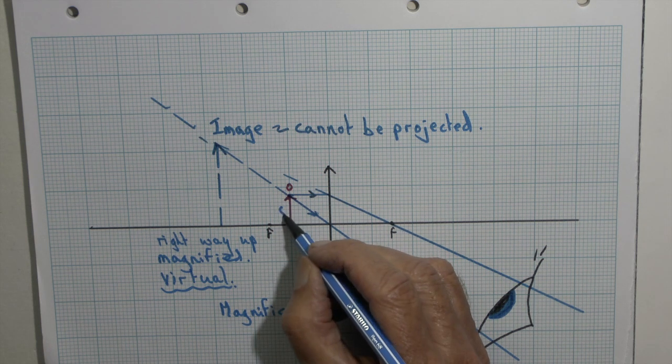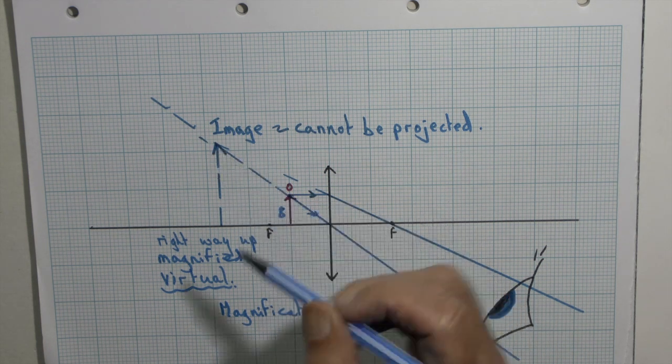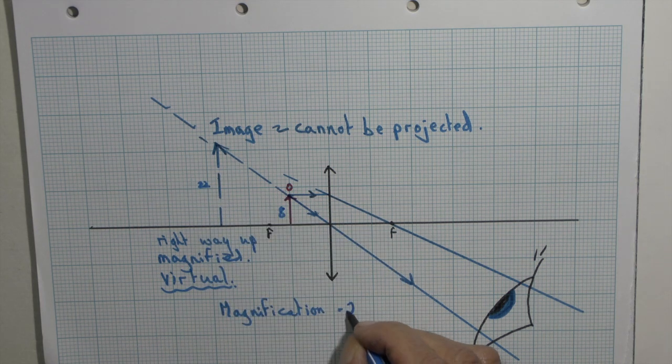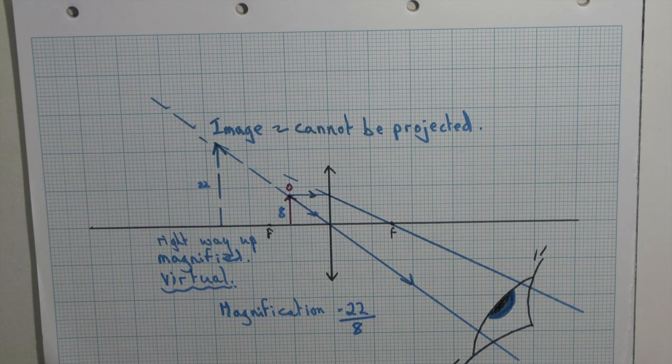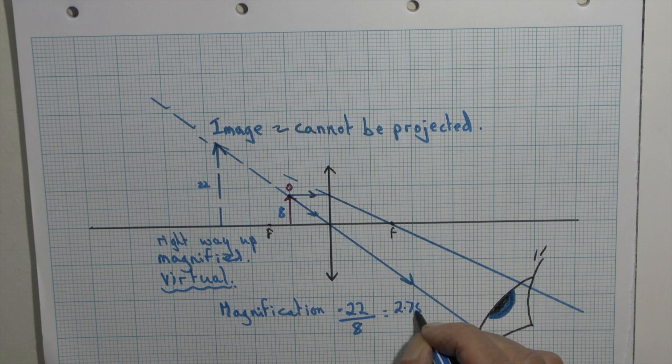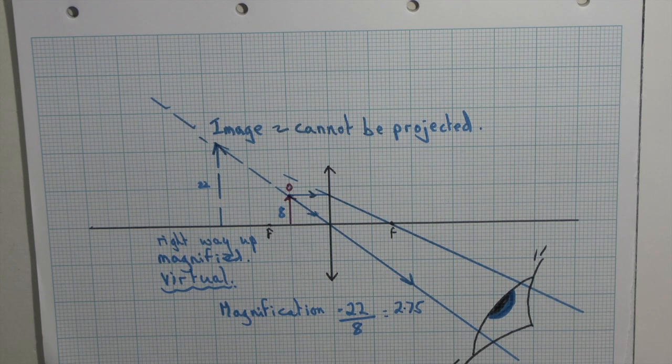Magnification is, well, the object height was eight millimeters, and the image height here is 22. So the magnification is 2.75.